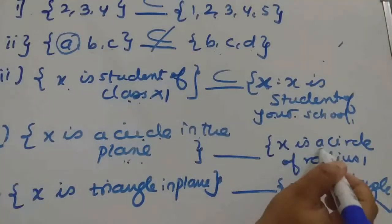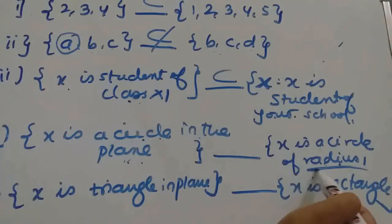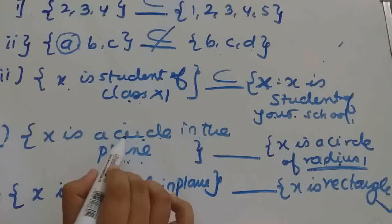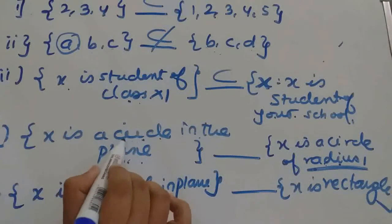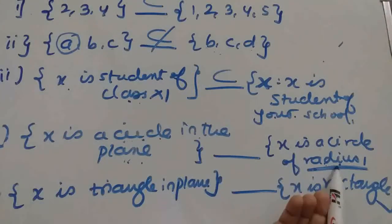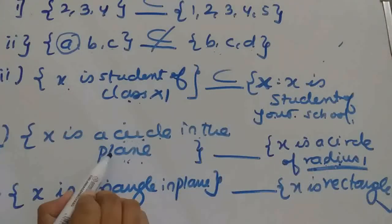Then it won't be a subset of this set. Because in this particular set, strictly circle of radius 1 will come. So if circle has radius 2 or radius 3, it won't be a subset of this set. Because here condition is not mentioned about the radius, so we will write it is not a subset.